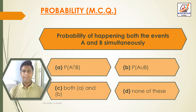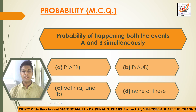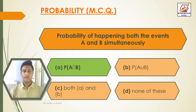Question 10: Probability of happening both the events A and B simultaneously. Option A: P(A∩B). Option B: P(A∪B). Option C: Both A and B. Option D: None of these. Answer: Option A — Probability of happening both events A and B simultaneously is P(A∩B).